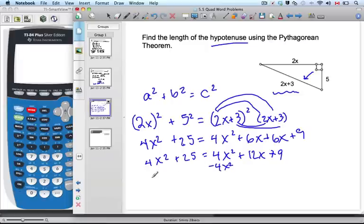Now let's bring everything to one side of the equation to equal zero. Get rid of this 4x² over here. So now I have 25 equals 12x + 9. I can just move my 25 over then. Where'd the x squareds go? They're gone. That makes it way easier.